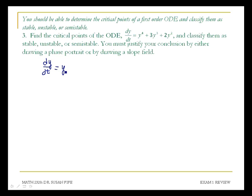On the right side, I can factor out a y squared. That will leave me with a factor of y squared plus 3y plus 2, and then y squared plus 3y plus 2 factors into y plus 2 times y plus 1.